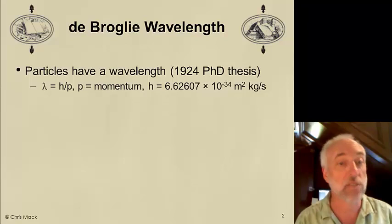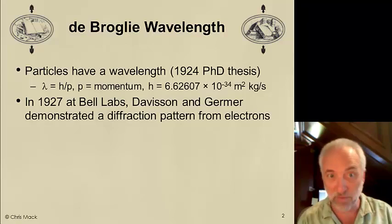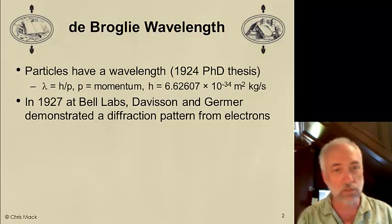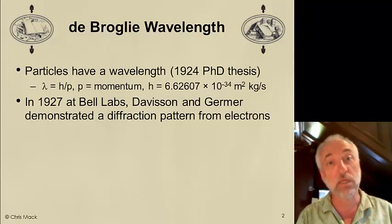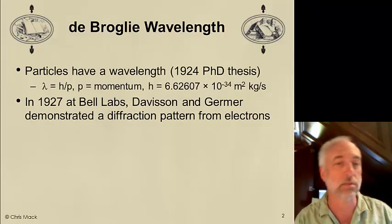Just a few years later, Davison and Germer at Bell Labs demonstrated a diffraction pattern made from electrons, thus proving this wave-particle duality that was proposed by de Broglie. Particles won't diffract, but waves do. So this was a great turning point in physics. It also meant that we could think about particles as waves and use optical principles to guide particles and, in fact, form images using particles like electrons.